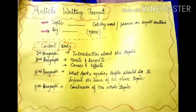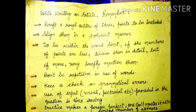While writing an article, remember some important points. First, draft a rough outline of ideas and points to be included — whatever comes to your mind, write it down. Second, align those ideas in a coherent manner, meaning connect them logically.